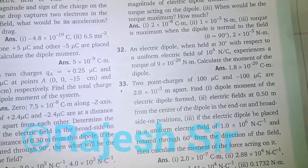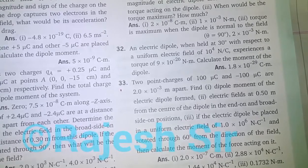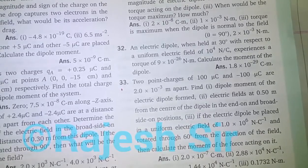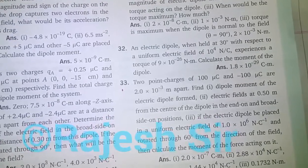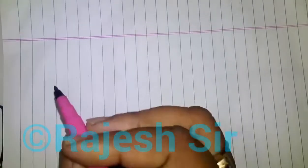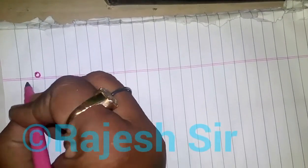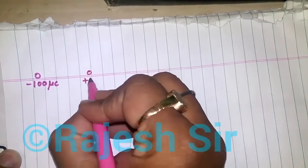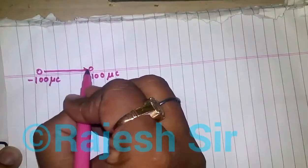Here we are about to discuss problem 33. Two point charges of +100 microcoulomb and -100 microcoulomb are separated by a distance of 2×10⁻³ meter. So here we have been given two charges: one is -100 microcoulomb and another is +100 microcoulomb.